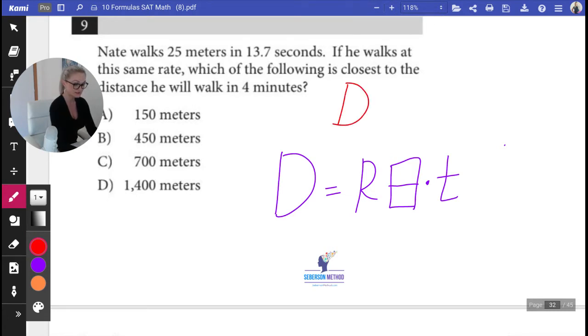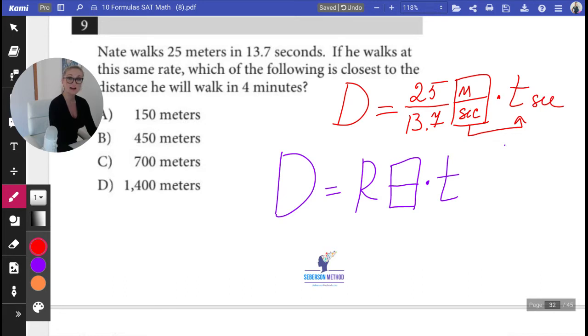D is equal to 25 over 13.7 (fridge)—inside of the fridge we say meters per second. Now tell me, what unit should the time be in? If you said seconds, you're absolutely right. Time should be in seconds.